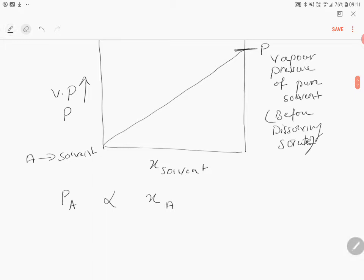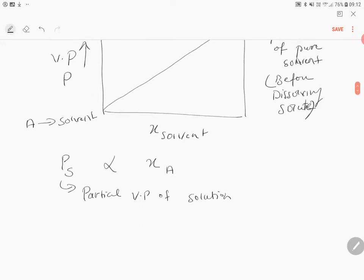Partial vapor pressure of solution is directly proportional to mole fraction of the solvent. If you remove the proportionality sign, we can say that partial pressure of the solution equals a proportionality constant times mole fraction of the solvent.